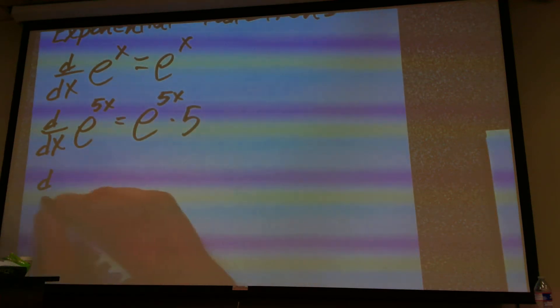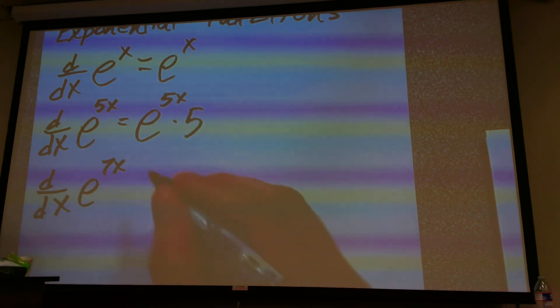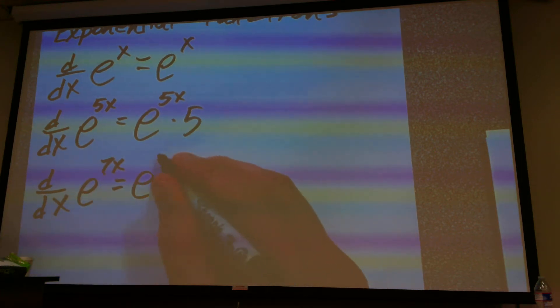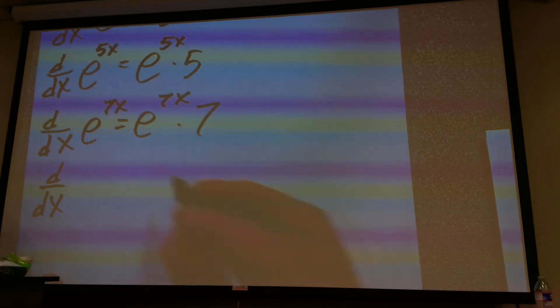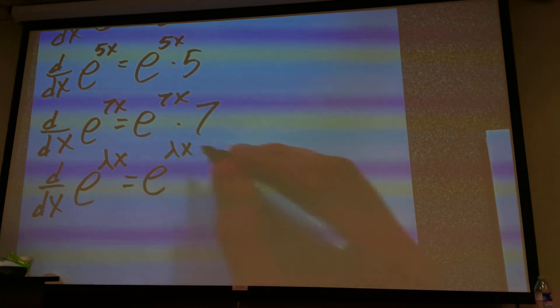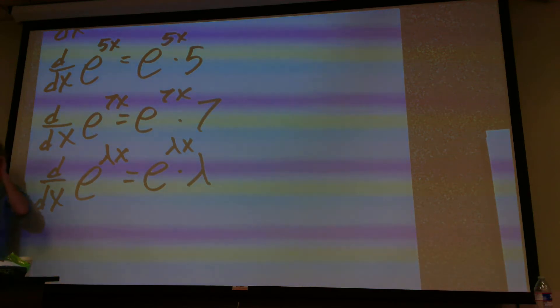And so, derivative of, let's say, e to the 7x is just e to the 7x, well, it spits out the 7. Now, let's do this in an arbitrary way. Let's say e to the lambda x. Now, e to the lambda x multiplied by lambda.